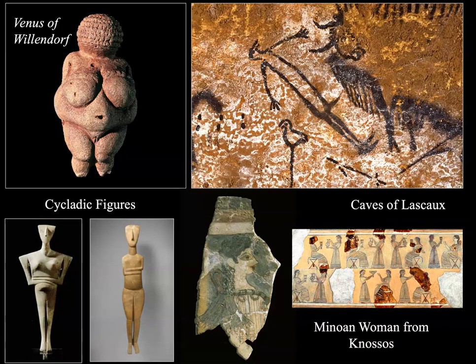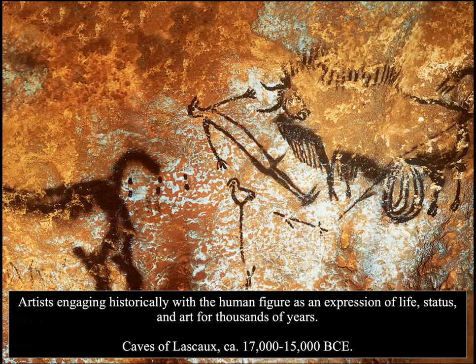There's a historic narrative about the human figure. It has been greatly represented over time by images of the Venus of Willendorf, the caves of Lascaux, Cycladic figures, Minoan woman from Knossos, as well as human figure examples from our civilization presentations. Artists have engaged with the human figure historically as an expression of life and status for thousands of years — Lascaux is 17,000 to 15,000 BCE — whether representing fertility, wealth, or athletic power.